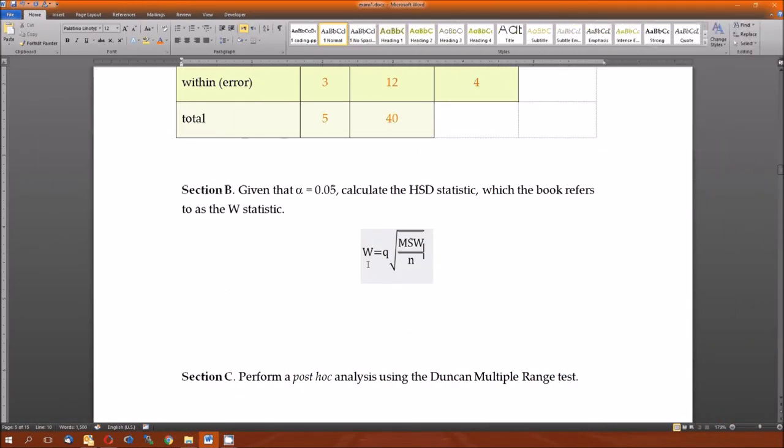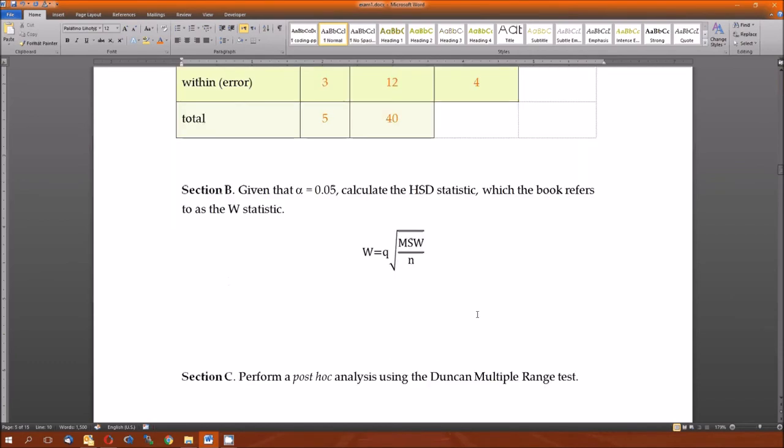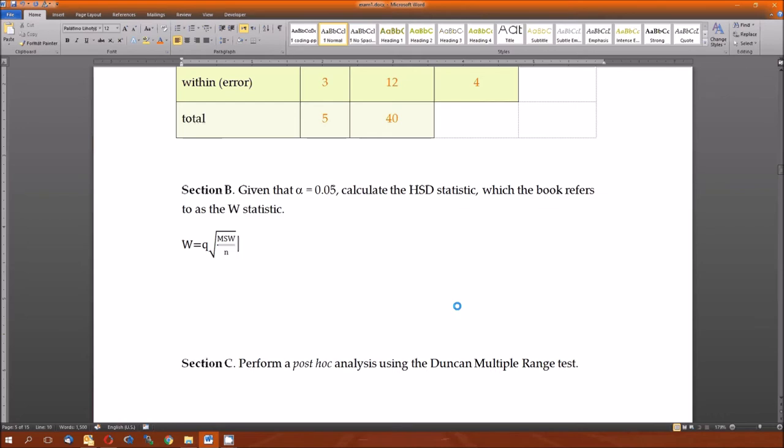Formula. Here's the formula for the W or the HSD. W is equal to that Q statistic times the square root of the mean squared error over N. Here N is 2. Remember this lower case N is the number of applications within each level. The mean squared within is 4. So this radical is just the square root of 2. And this Q, well, it's not in the back of the book. So I wanted to see what you guys would do with that. Some of you pulled a number out of the air. Some of you explained where you got that number. And I really appreciated that explanation. It's what got you the points. One of you got the exact number and I have no idea how. The correct number for Q is 5.91. So 5.91 times square root of 2, that actually comes out to be equal to 8.357.